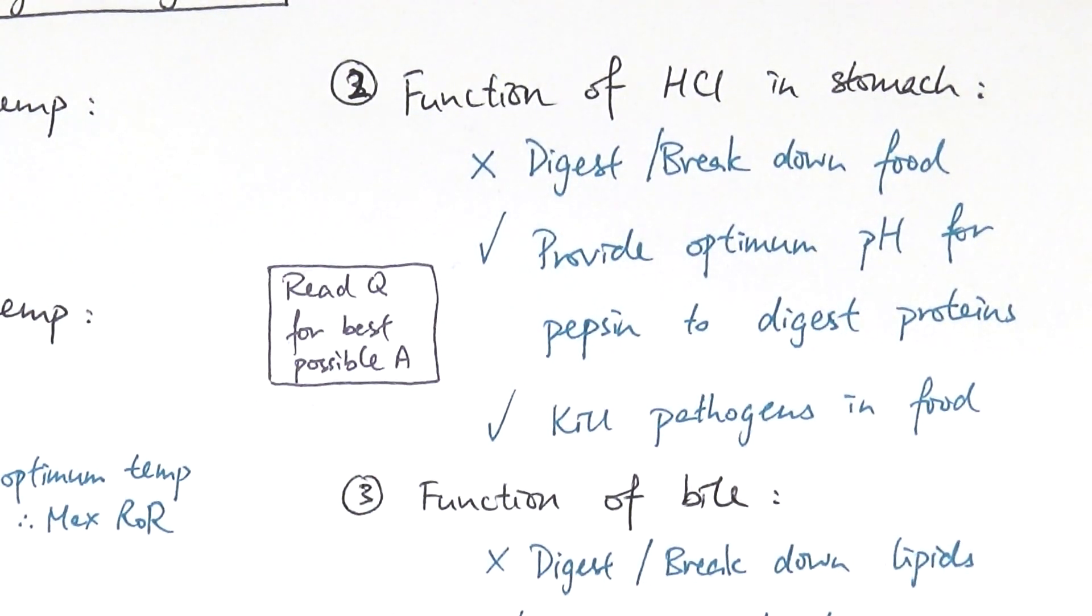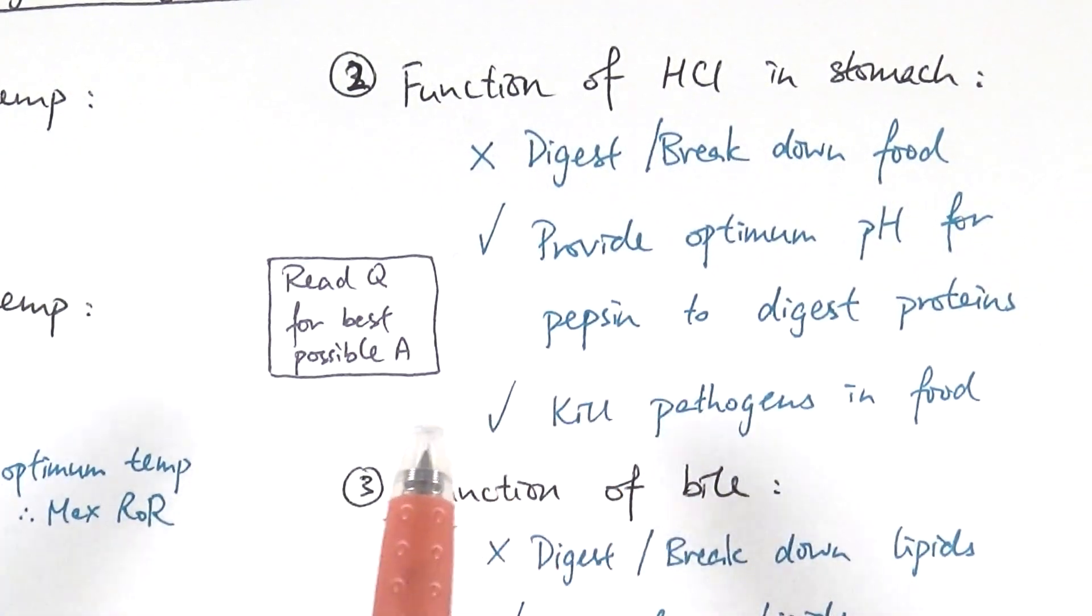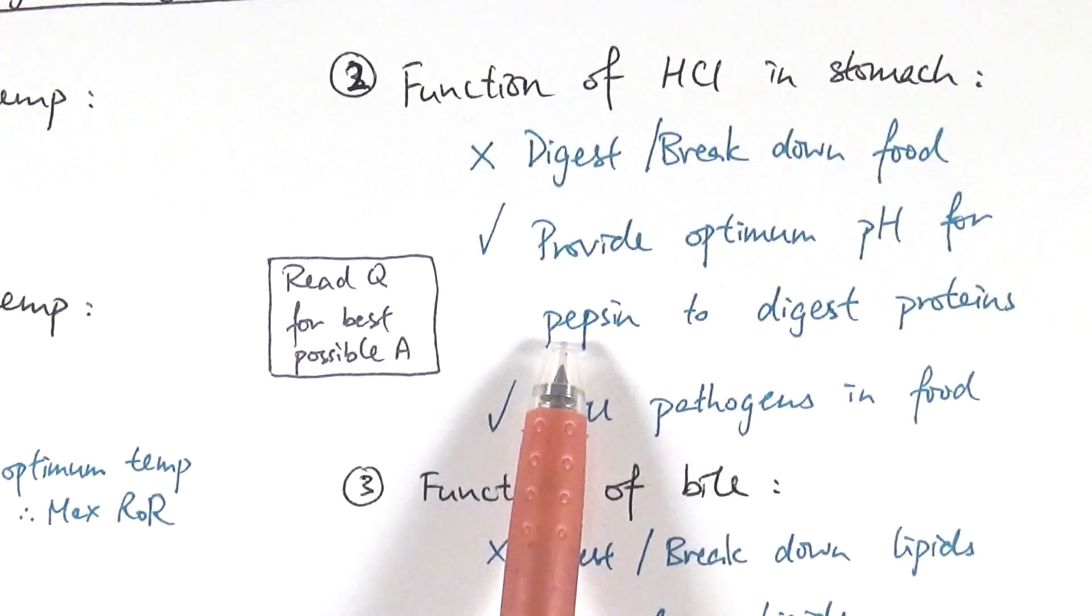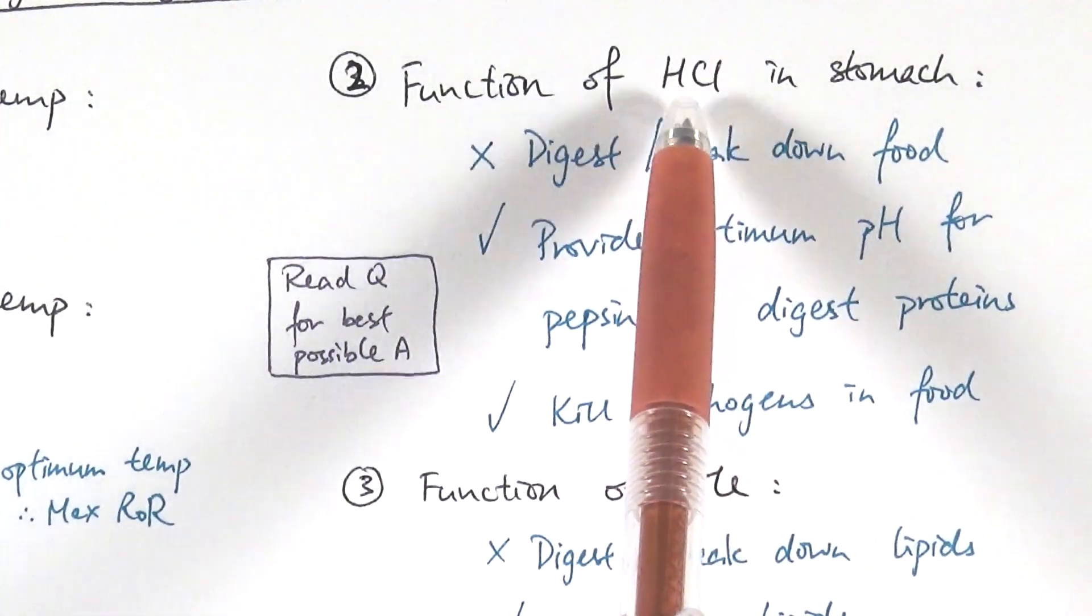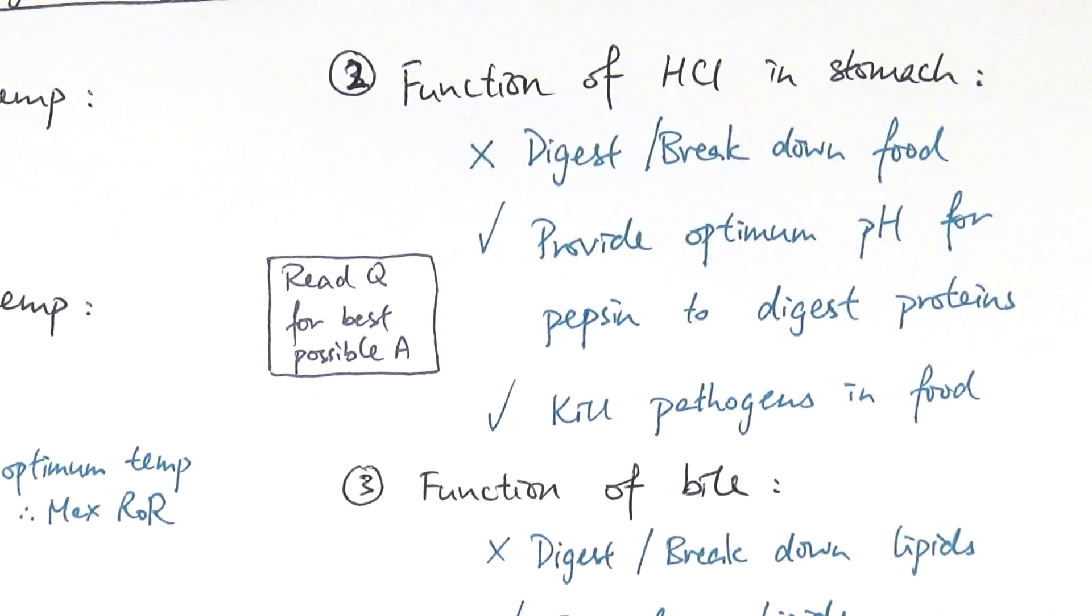The hydrochloric acid is there for two reasons. Number one, and the most important one in some sense, is that they provide optimum pH for pepsin to digest proteins in the stomach. Pepsin is a very specific type of protease, which is an enzyme that breaks down proteins. It's a specific type of protease that exists in the stomach and they are very well adapted to only work at pH 2. So they're very low pH and that's exactly why we find acid in the stomach.